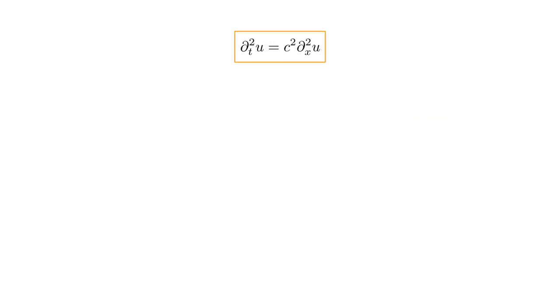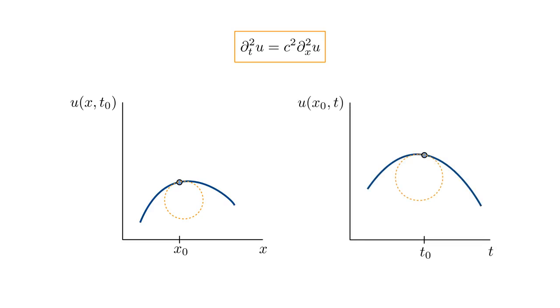Here is a brief illustration of the physical interpretation of the wave equation. Suppose, at time T zero, we take a snapshot of the string's shape. This defines the graph U of X T zero. At a point X zero, we can find the circle which passes through the graph and best represents the graph's slope and curvature there. The wave equation then tells us that if we plot the field at point X zero as a function of time, and find the best fit circle at time T zero, then the radius of this circle is determined by the radius of the previous circle. Roughly speaking, the radius of the time circle equals the radius of the space circle divided by C squared.